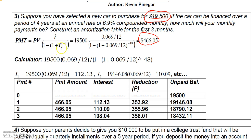Now let me explain what happens when you make a payment, using an amortization schedule. Some schedules don't show the first line, but I'm going to show what I call the zero row — the zero payment. At the beginning you make no payment, owe no interest, and there's no principal reduction, but you have an unpaid balance of nineteen thousand five hundred dollars.